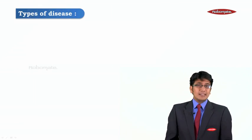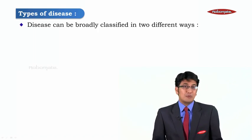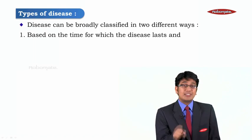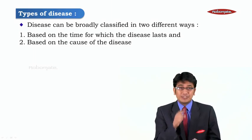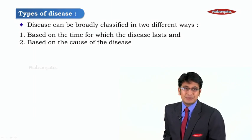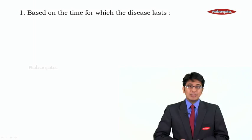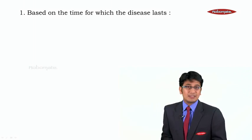After understanding the levels and causes of disease, let's see the types of disease. Disease can be classified in two different ways: based on the time for which the disease lasts, and based on the cause of the disease. Let's understand these two types in detail.